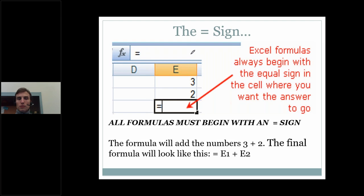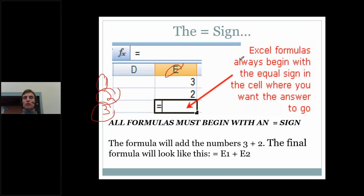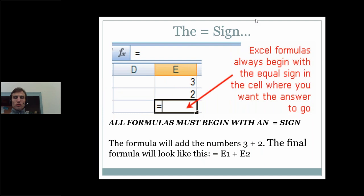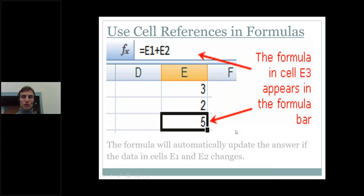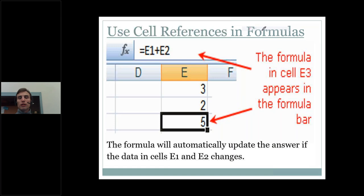Here's a close-up look at an Excel worksheet. We have columns D and E, rows 1, 2, and 3. This person has entered a 3 into cell E1, a 2 into cell E2. In cell E3, they're entering a formula because of the equal sign — every Excel formula begins with the equal sign. When they construct that formula, they're not going to type 'equals 3 plus 2.' They're going to type 'equals E1 plus E2.' We always use the cell names when we build our formulas. The formula will automatically update the answer if the data in cells E1 and E2 change.